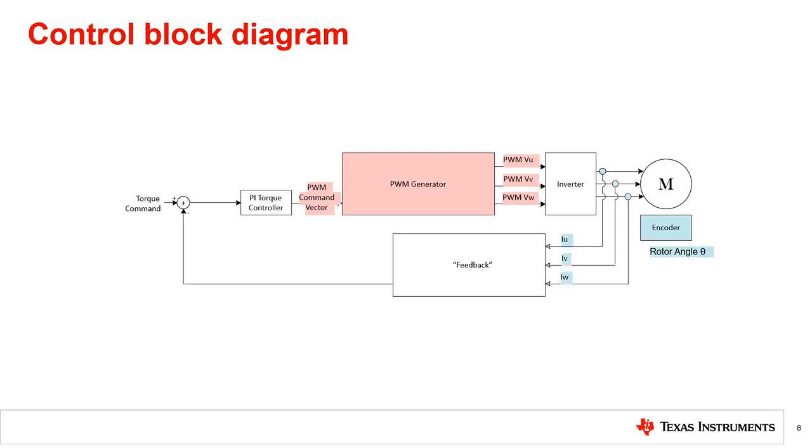However, commutating a motor is a controlled process, so we need to include a feedback loop in our system to define the position of the rotor, shown as rotor angle theta. This feedback is then used to determine the next sequence of phase inputs in order to target some parameter such as a torque command being fed into a PI controller.